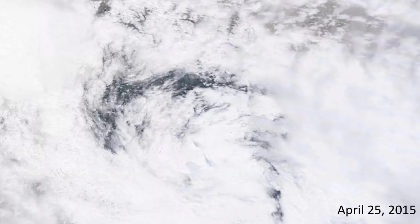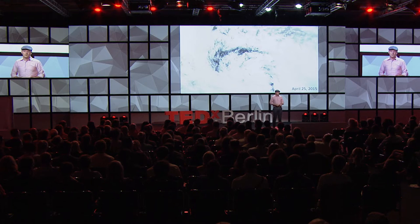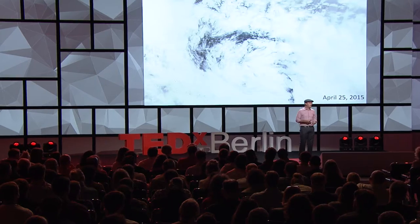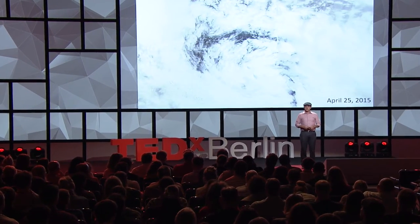This satellite image is of central Nepal, taken on April 25th of last year. 35 minutes after this image was taken, a devastating 8.0 magnitude earthquake struck the country. This resulted in over 8,000 people losing their lives, over 20,000 people injured, and hundreds of thousands made homeless.